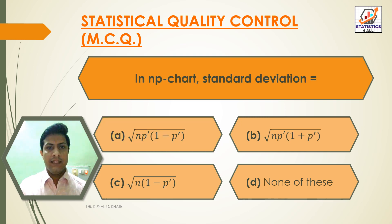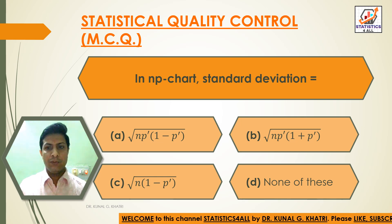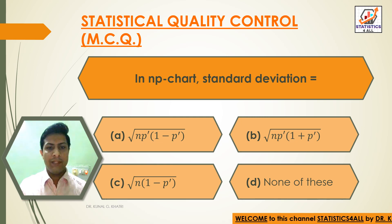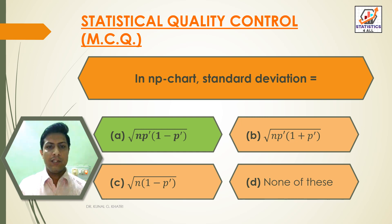Next question: in NP chart, standard deviation is equal to? Option A: under root NP' into bracket (1 minus P'), Option B: under root NP' into bracket (1 plus P'), Option C: under root N into bracket (1 minus P'), Option D: none of these. Answer: Option A — under root NP' into bracket (1 minus P') is the standard deviation for NP chart.